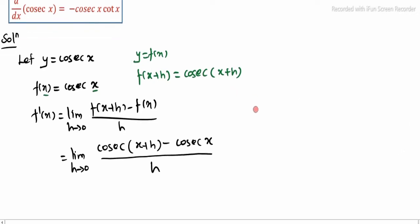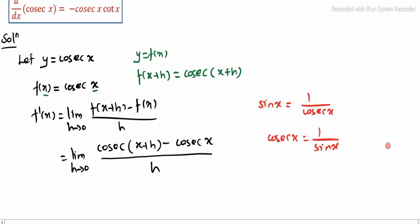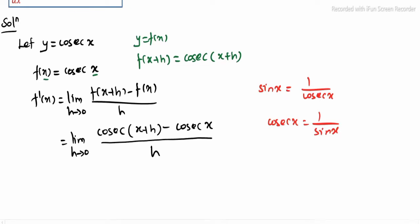We know that sin x ka na reciprocal is 1 by cosecant x. So cosecant x is nothing but 1 by sin x. Now in this place, cosecant x is equal to 1 by sin x, apply pannla.